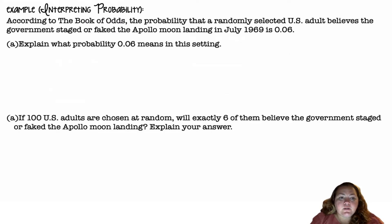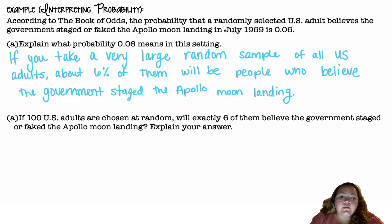An example of interpreting probability. According to the Book of Odds, the probability that a randomly selected U.S. adult believes the government staged or faked the Apollo moon landing in July 1969 is 0.06. Explain what the probability of 0.06 means in this setting. If you take a very large random sample of all U.S. adults, about 6% of them will be people who believe the government staged the Apollo moon landing.